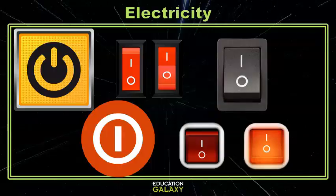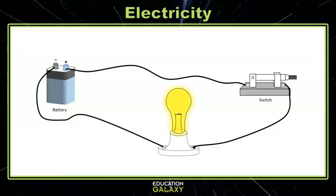If you look at some electrical switches, you might notice a line for on, or closed, and a circle, or O, for open. Now we can open and close our circuit.